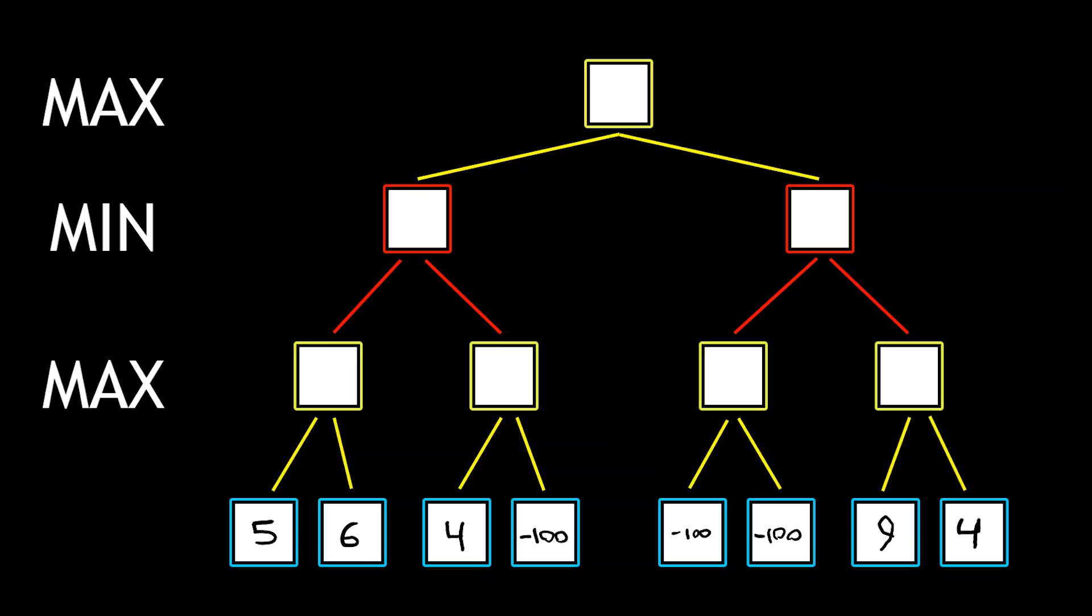So we start at the top node and traverse to the left. So we get all the way down to these five and six down here. And this is our turn to make a move. So we can either make a move that gives us five points, or we can make a move that gives us six points. So we first look at the left move. We see that that gives us five points.